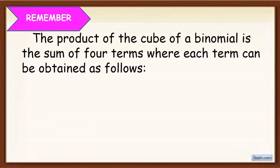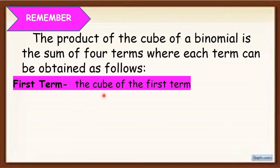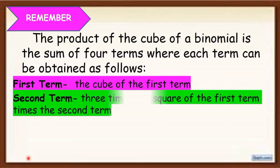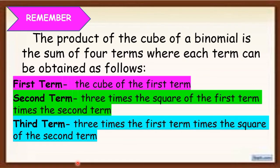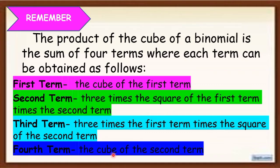Remember, the product of the cube of a binomial is the sum of 4 terms, each of which can be obtained as follows. First term: cube the first term. Second term: 3 times the square of the first term times the second term. Third term: 3 times the first term times the square of the second term. And the fourth term: the cube of the second term.